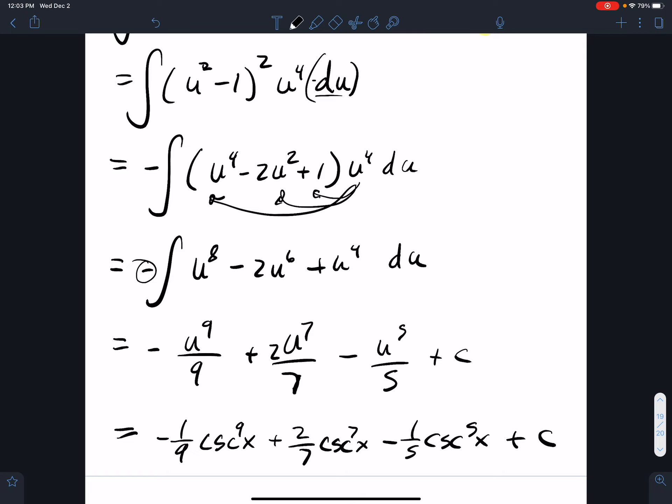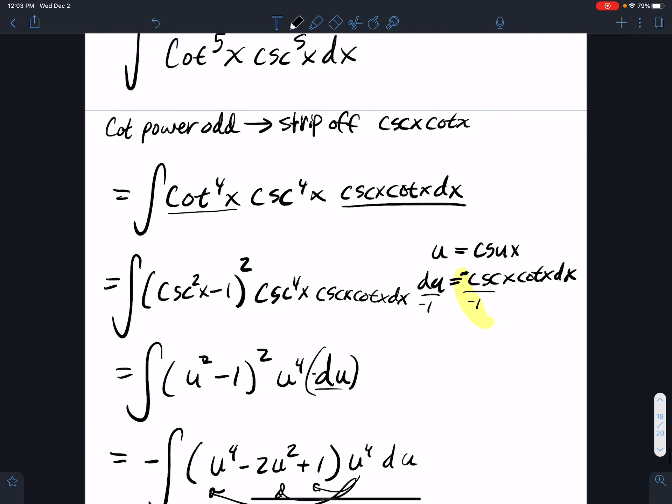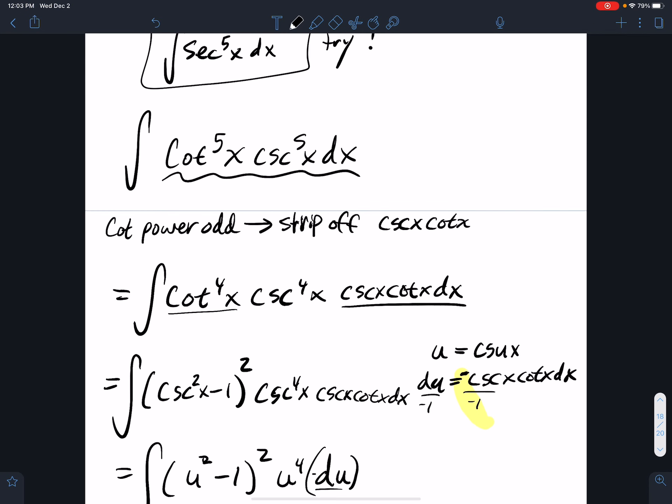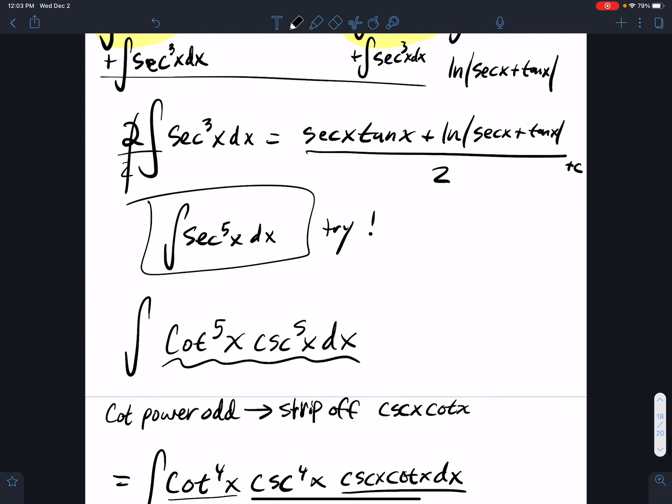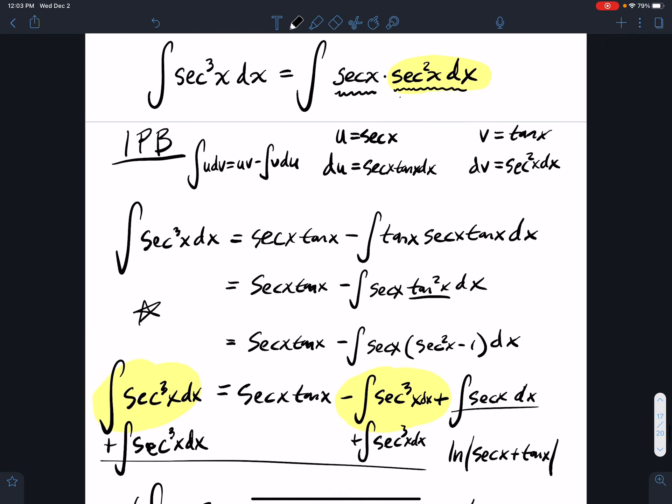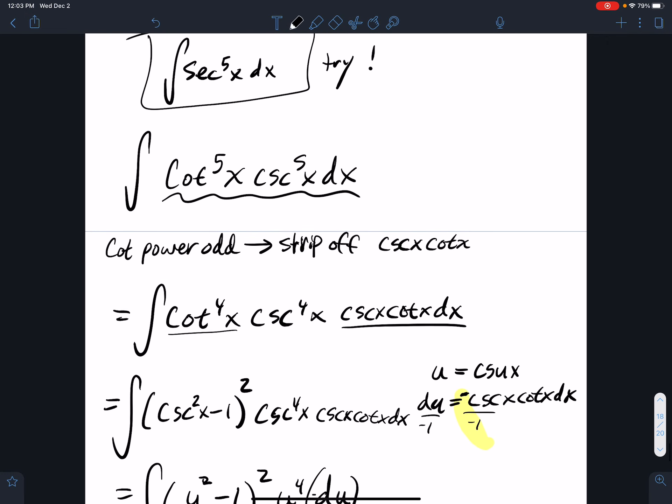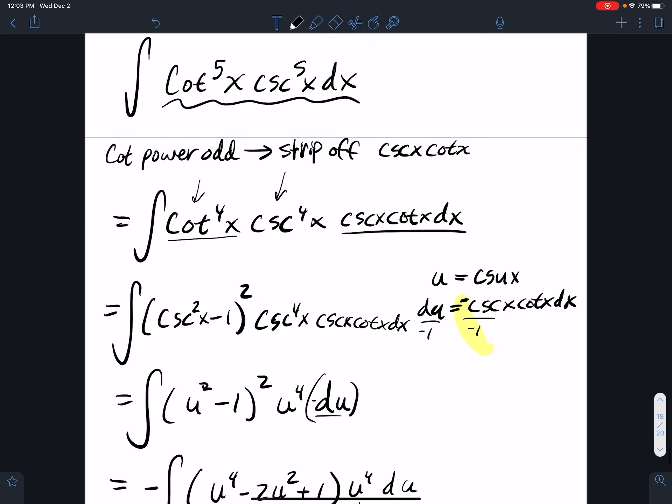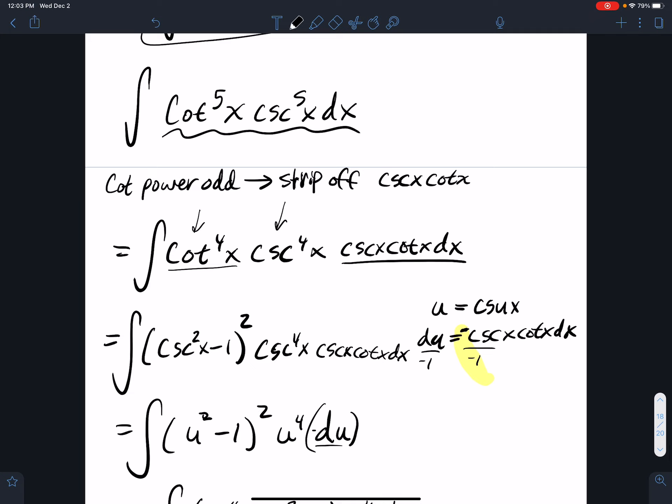All right, so hopefully that helps you out with your cosecant cotangent scenario. I really think of cosecant cotangent as very similar to the types of problems where we had tangents and secants. You think about tangent, reciprocal is cotangent, and secant reciprocal is cosecant, so it's very similar. That's why I'm not spending a whole lot of time on that because it's the same idea.